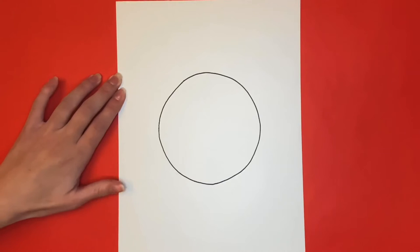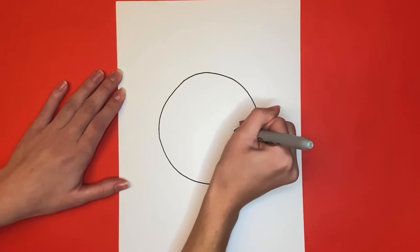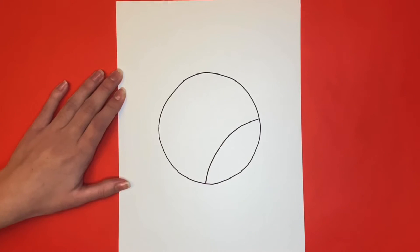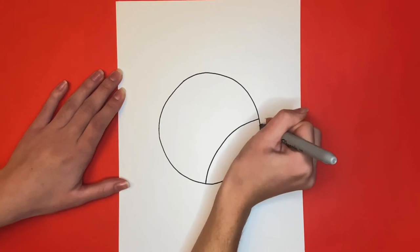Now we're going to add a few curved lines. First, we will start by the bottom right side of the circle and draw a big curved line going across. Next, we will draw another curved line just like the one we drew, but a little bit below it.